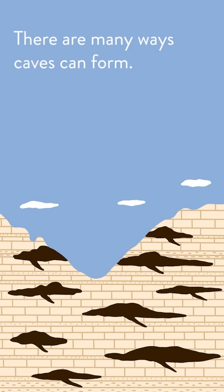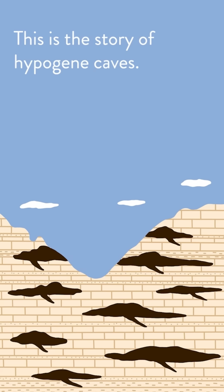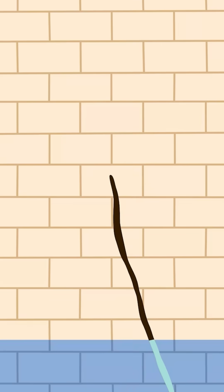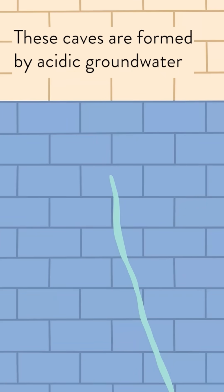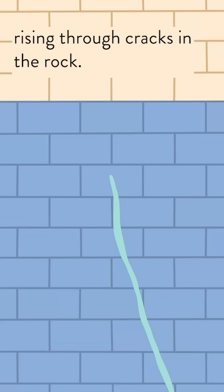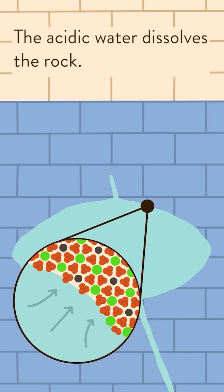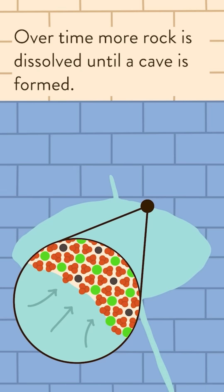There are many ways caves can form. This is the story of hypogene caves, caves that form deep beneath the surface. These caves are formed by acidic groundwater rising through cracks in the rock. The acidic water dissolves the rock. Over time, more rock is dissolved until a cave is formed.